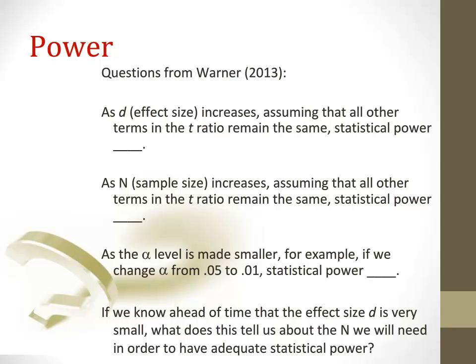Well, if we know the effect size is small, what we know in order to ensure a power of .8 is that we're going to need a large n. In fact, we may even need an n up to 786 according to Cohen.